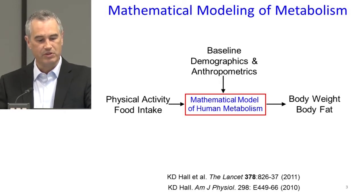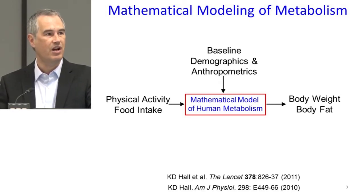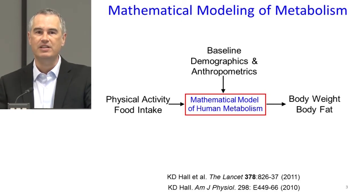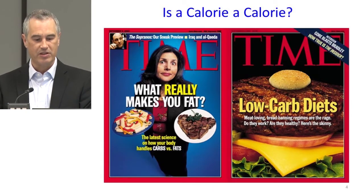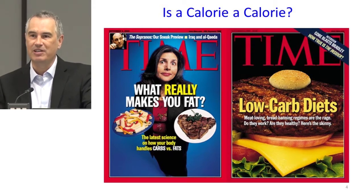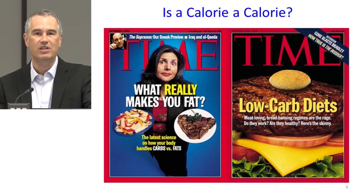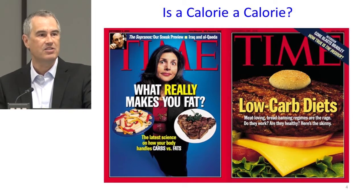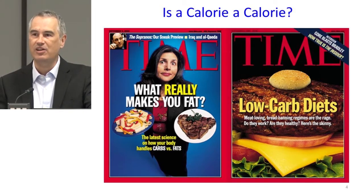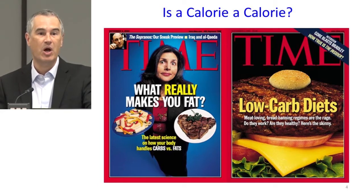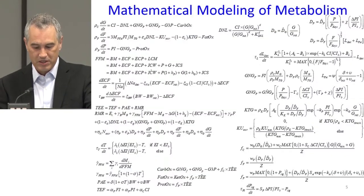We're specifically interested in the question of when you manipulate not the calories in the diet, but the composition in terms of carbohydrate, fat, and protein: is there any evidence to support the idea that a calorie is not a calorie? The idea that if you change the macronutrient distribution of the diet, you could influence metabolism so as to dramatically change energy expenditure and thereby lead to different amounts of weight loss or body fat loss. So we developed a model.